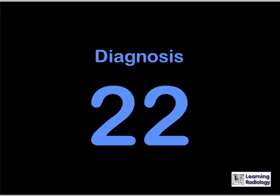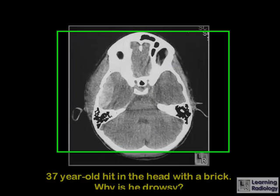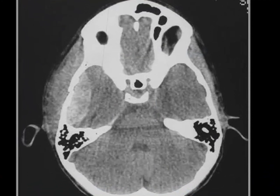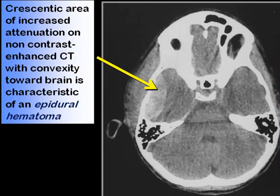This is a 37-year-old who was hit in the head with a brick — why is he feeling drowsy? The yellow arrow points to a crescentic area of increased attenuation on non-contrast enhanced CT, with convexity pointing toward the brain, characteristic of an epidural hematoma. This person also has a large scalp hematoma, to which the red arrow is pointing.